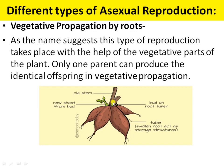In vegetative propagation by root, in some plants the roots are modified to store food — for example, the sweet potato. Here the roots are modified to store food. Such roots have buds on them which can grow to produce a new sweet potato plant. From one root of a sweet potato, many plants can be reproduced. This is vegetative propagation by roots.